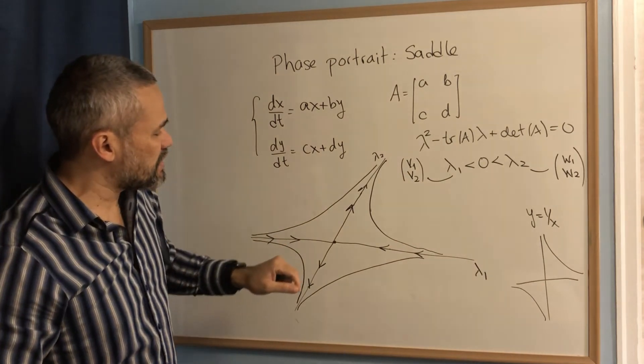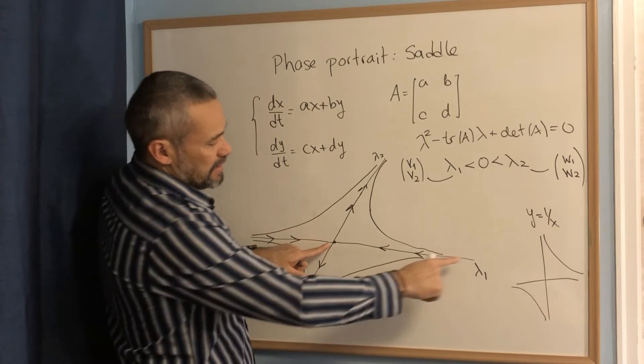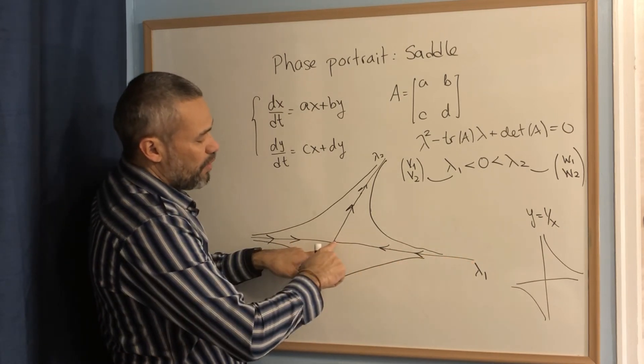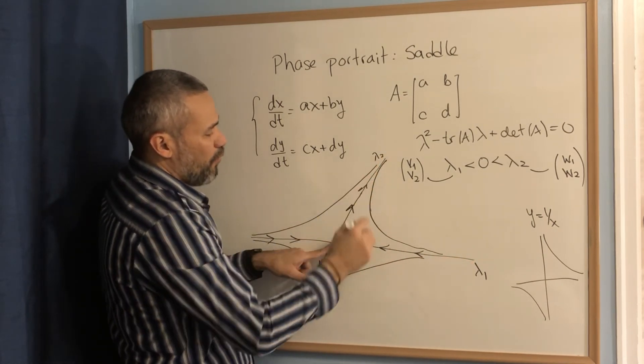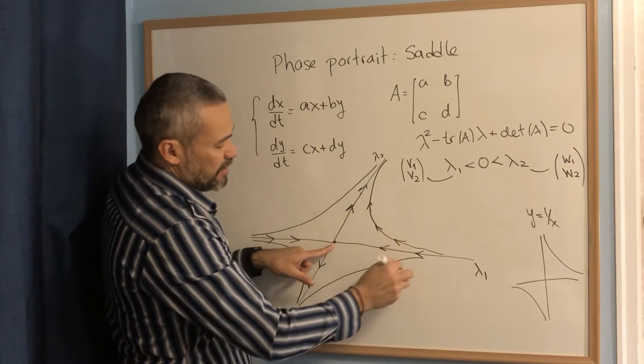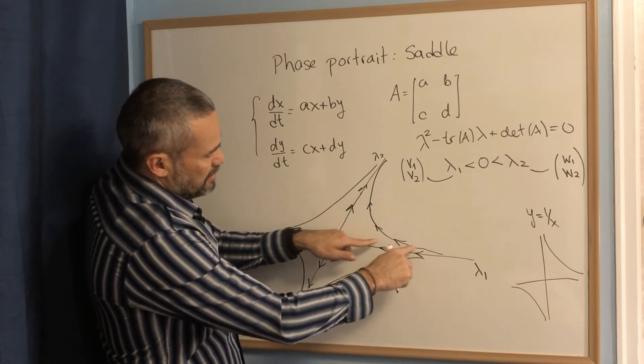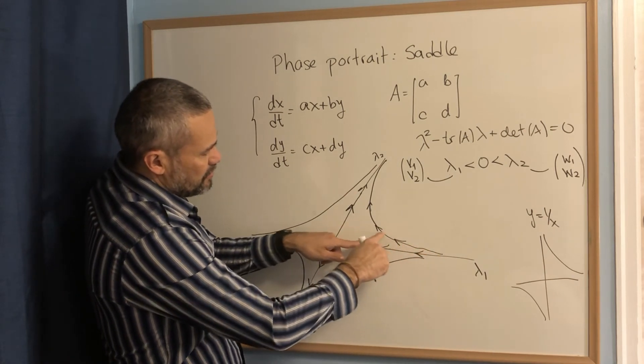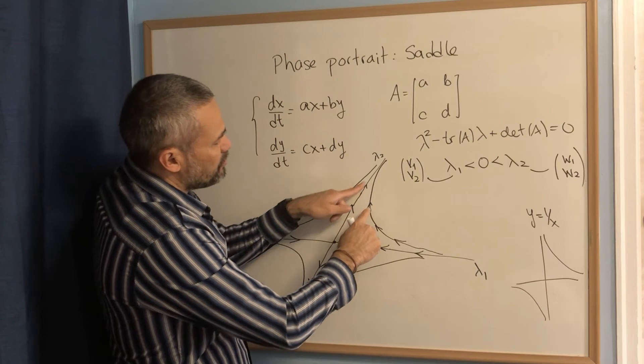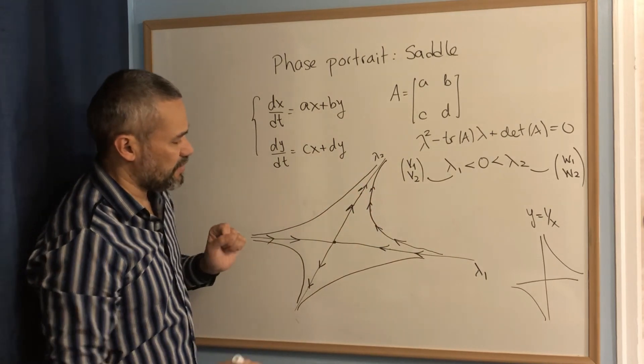And in order to decide about the directions, for example, in this orbit, we notice that this semiline goes toward the origin. This one goes away. And for that reason, the arrows here, they try to match the direction of the semilines. Here, they go toward the origin. And the arrows go in this direction. Here, the arrows go away. And the arrows in the orbit also go in the same direction.